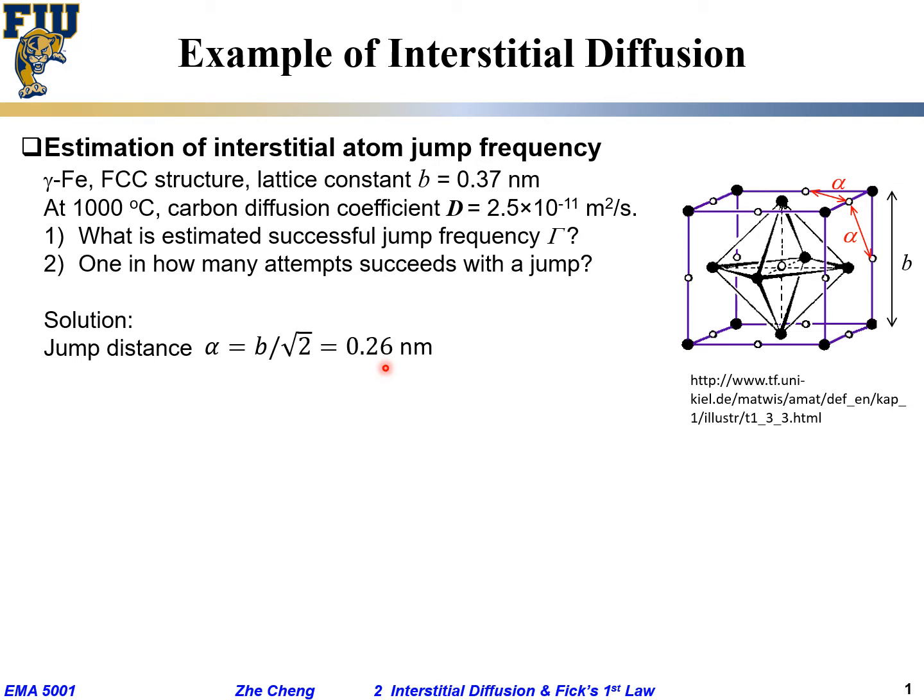That's our so-called successful jumping distance. It's not, in this case, the lattice parameter. Make sense? The geometry.